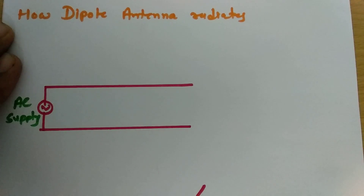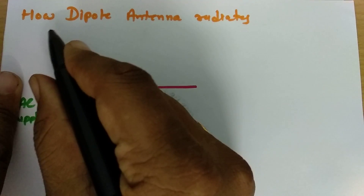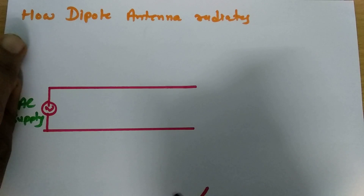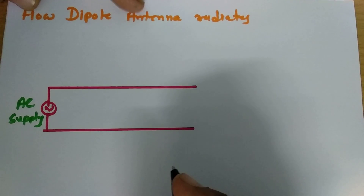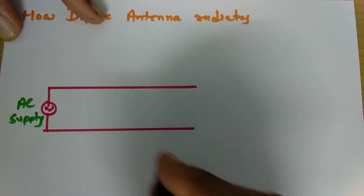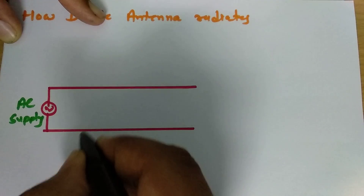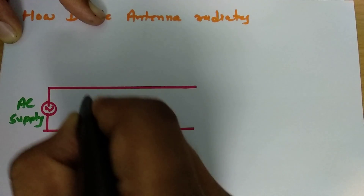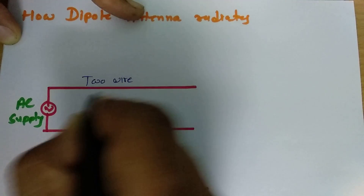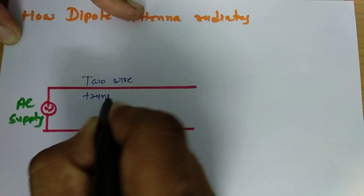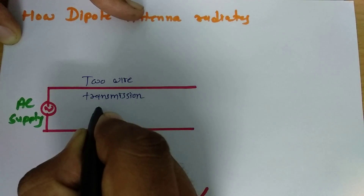Welcome to the Antenna and Wave Propagation Playlist. In this session, I will explain how a dipole antenna radiates. Before I do that, let us consider a two-wire transmission line.